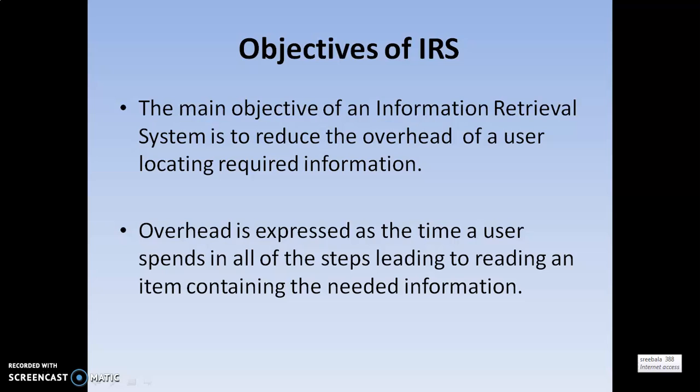As discussed in the previous class, an item may be a text, a pattern, a code, or a multimedia object like a JPG image or an MPG file. Like that, the item may be of any kind — it may be a multimedia object, a pattern, a word, or a text. Whatever it is, that is treated as an item.